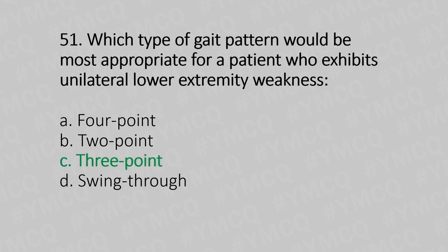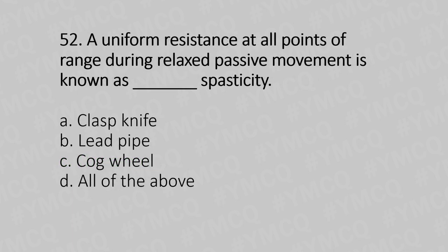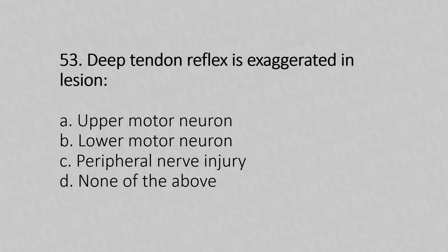Question 52: A uniform resistance at all points of range during relaxed passive movement is known as — Option A: clasp knife, Option B: lead pipe, Option C: cogwheel, Option D: all of the above. The answer is Option B, lead pipe.